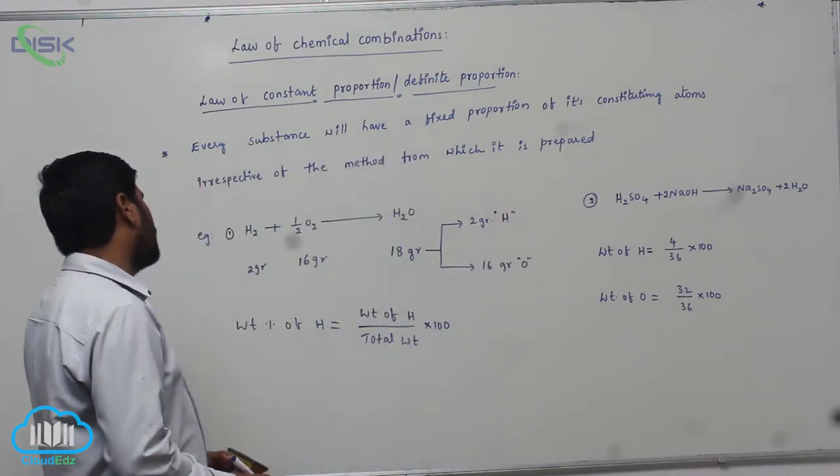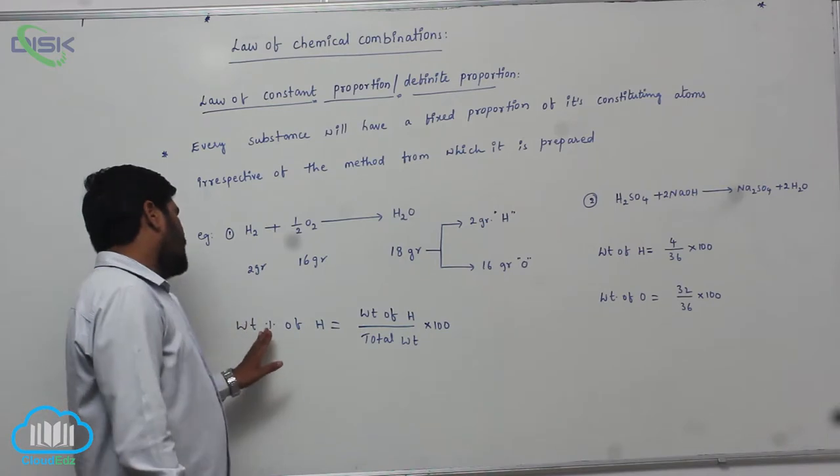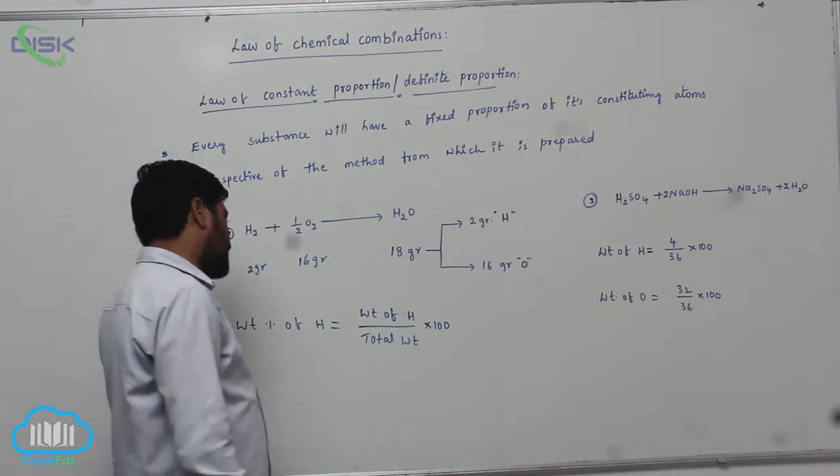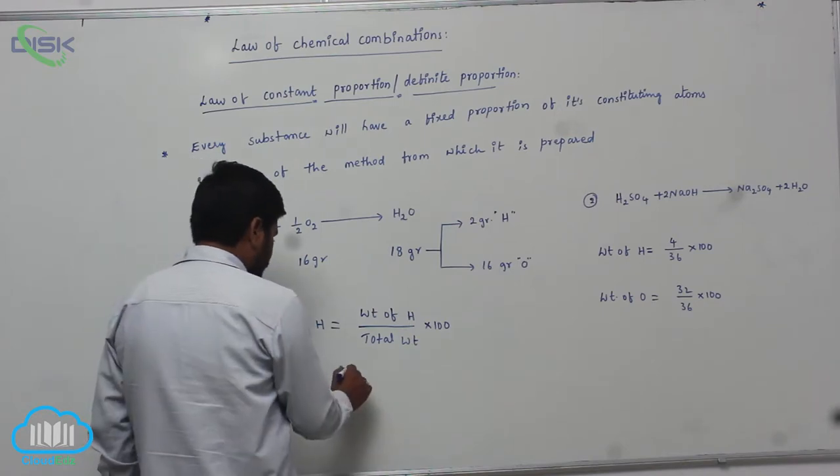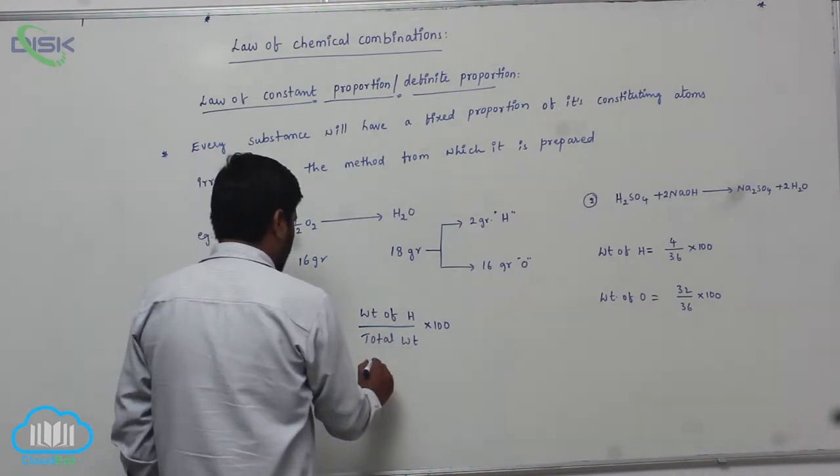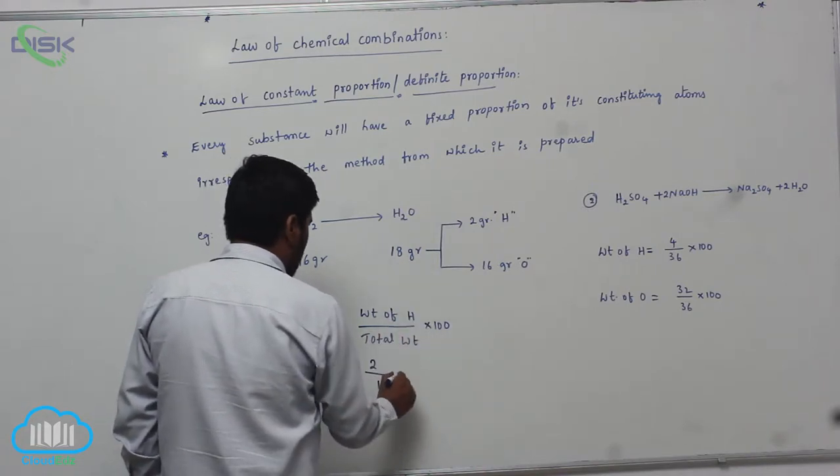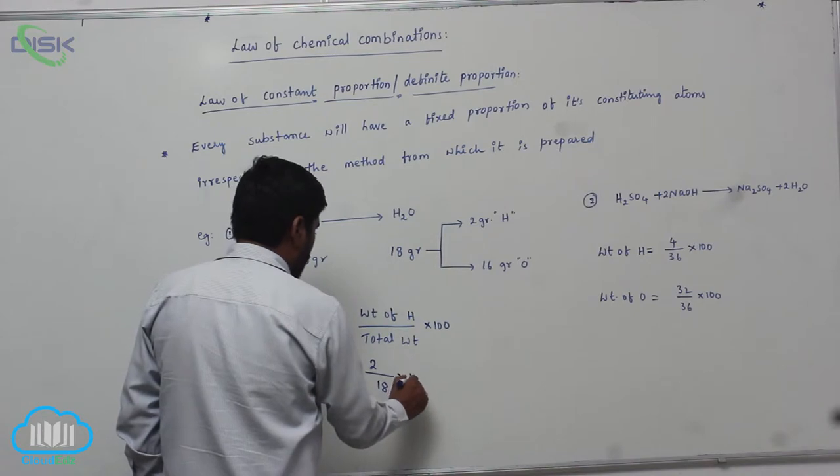So therefore, if you want the weight percentage of hydrogen, weight percentage of hydrogen equals to weight of hydrogen which is 2 grams. Total weight is 18 grams into 100.